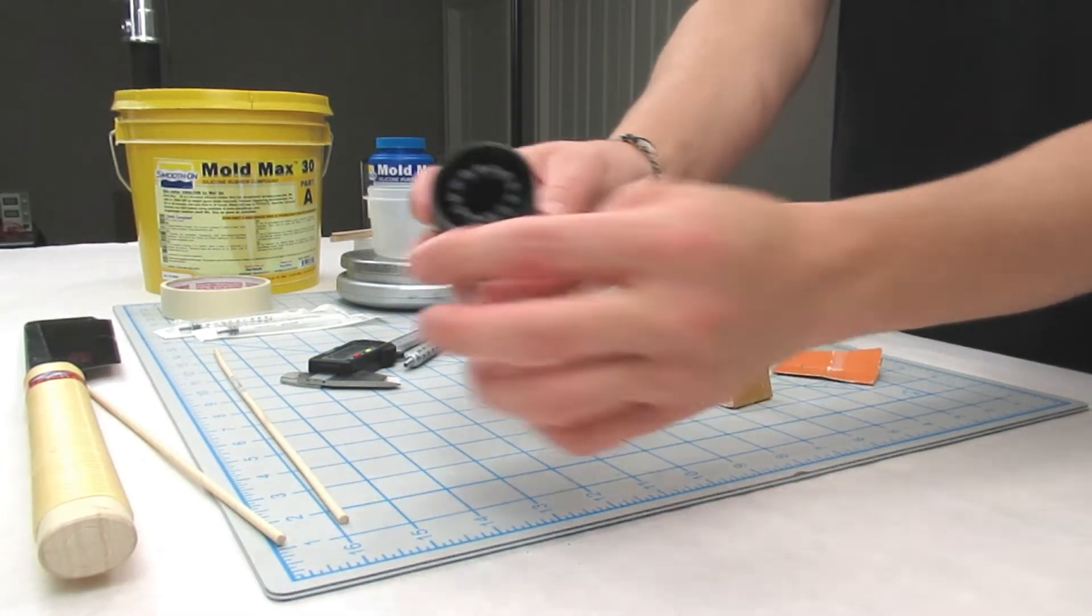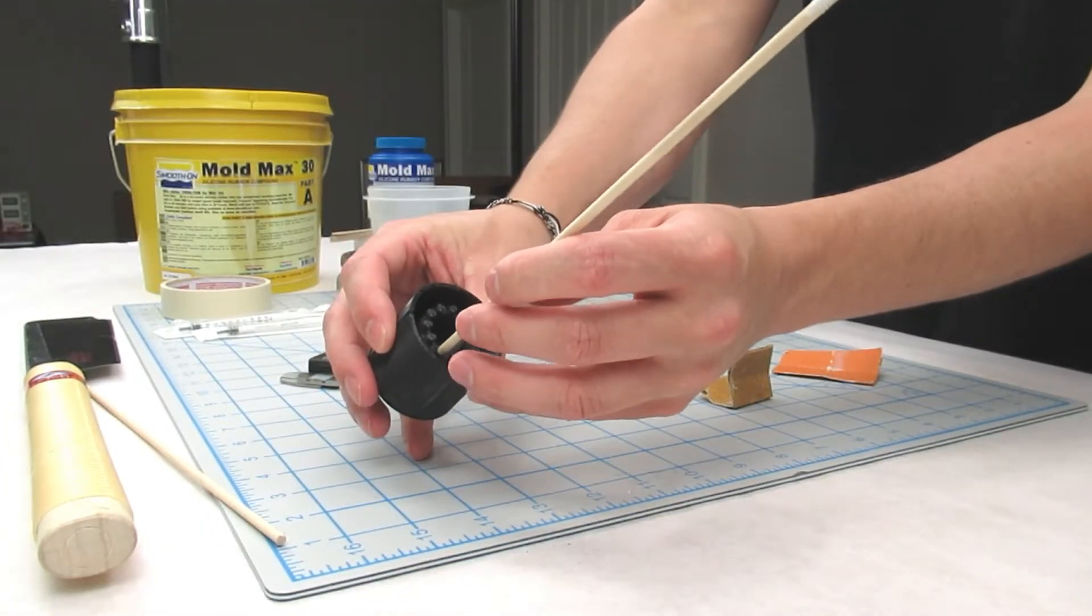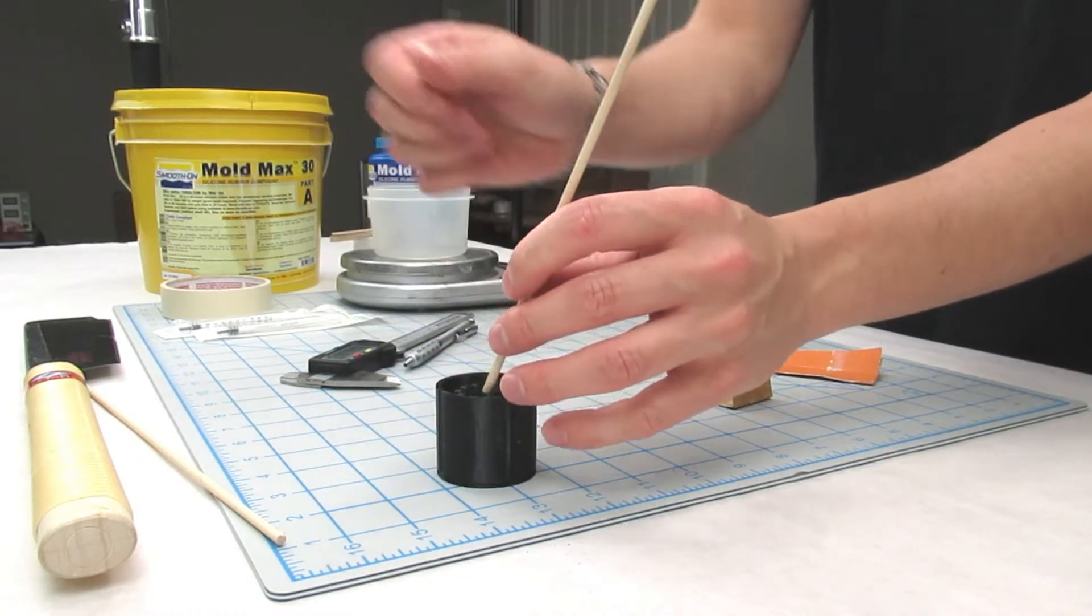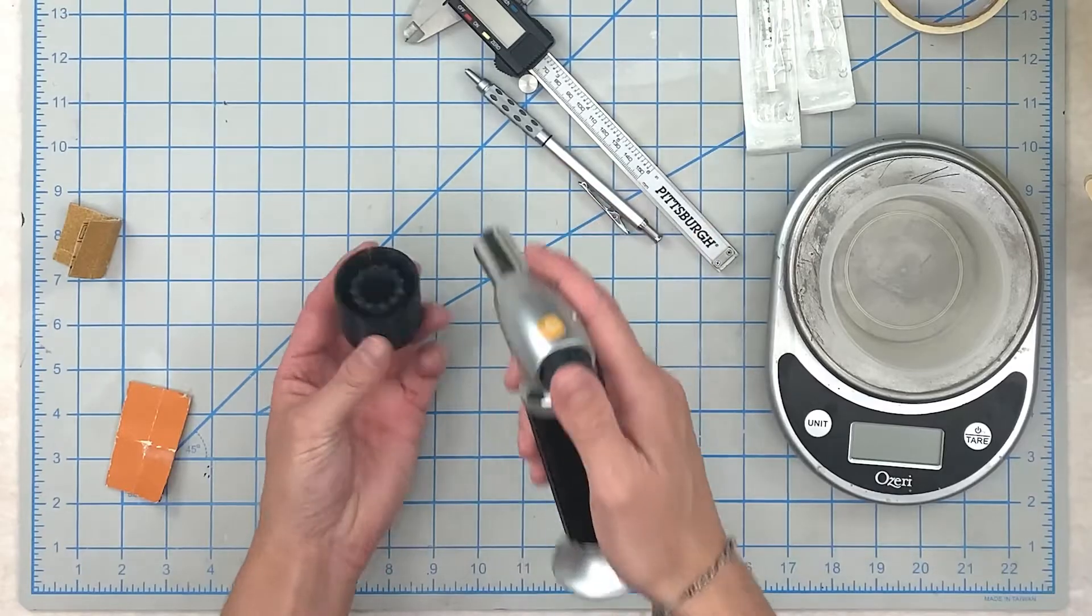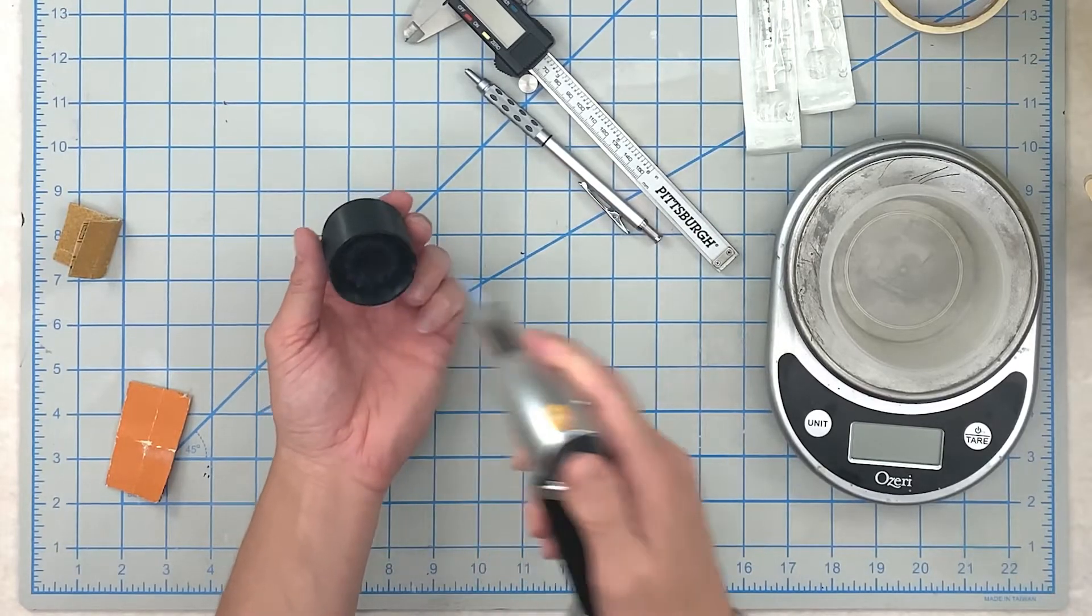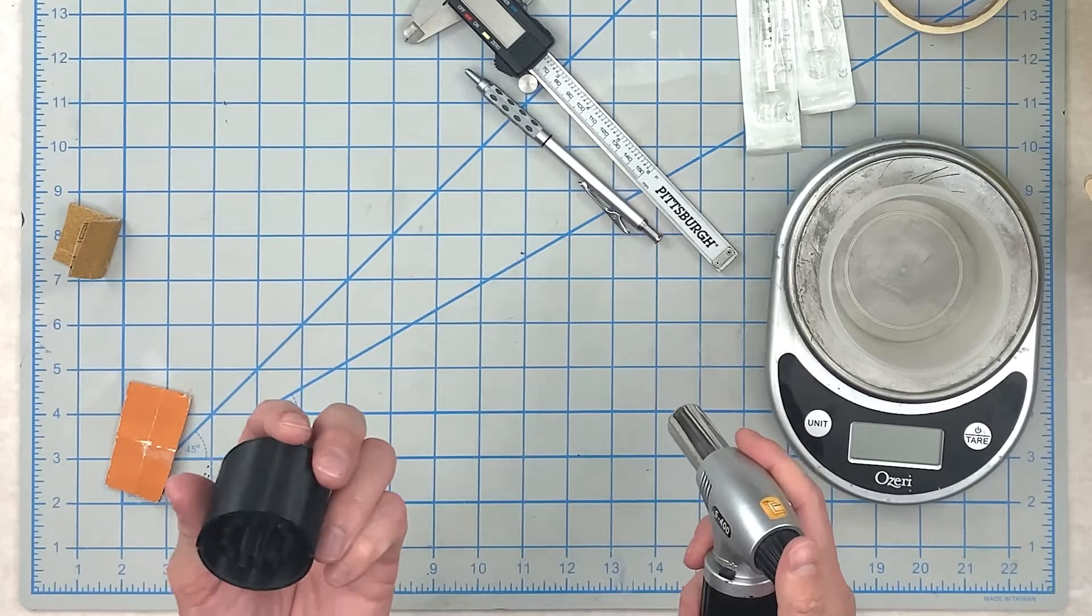The notches here will be imprinted onto the mold to position the dowels. Just cleaning up imperfections in the print.